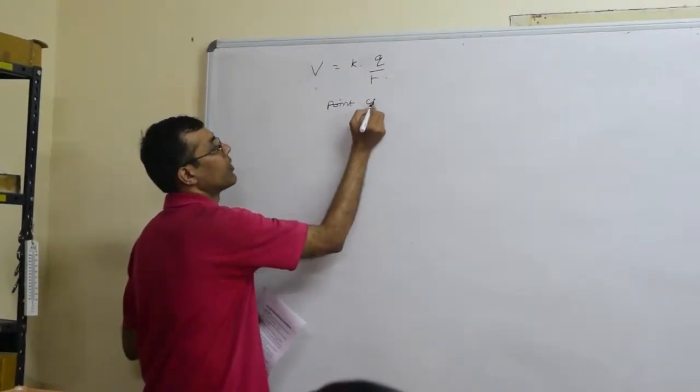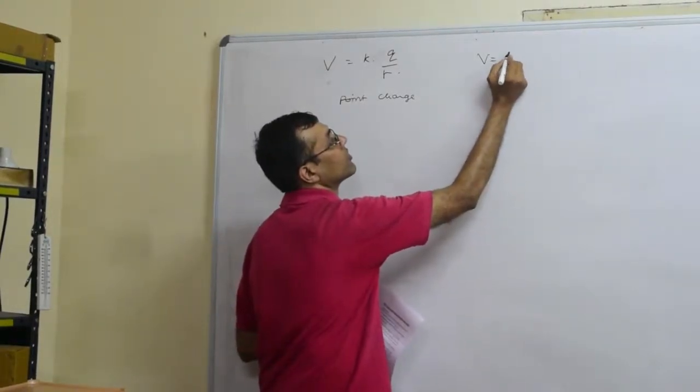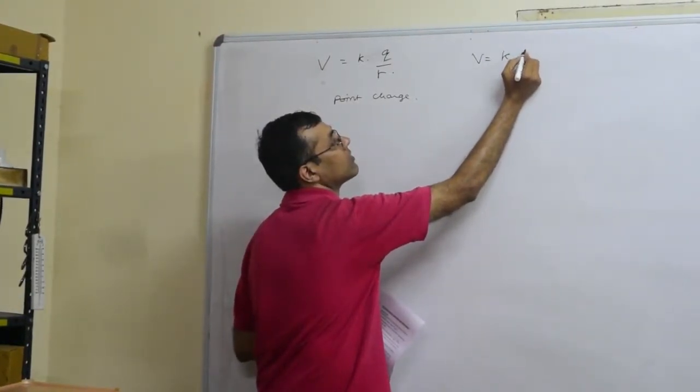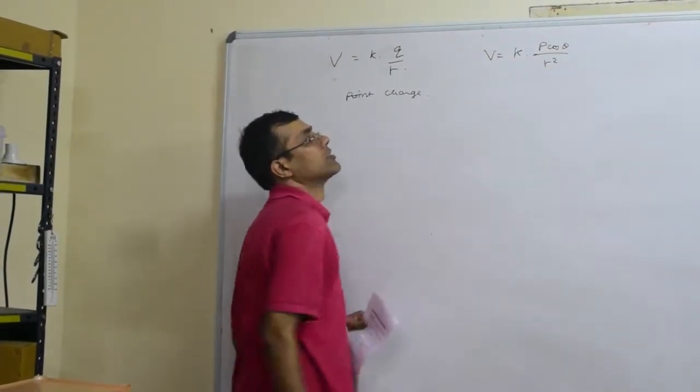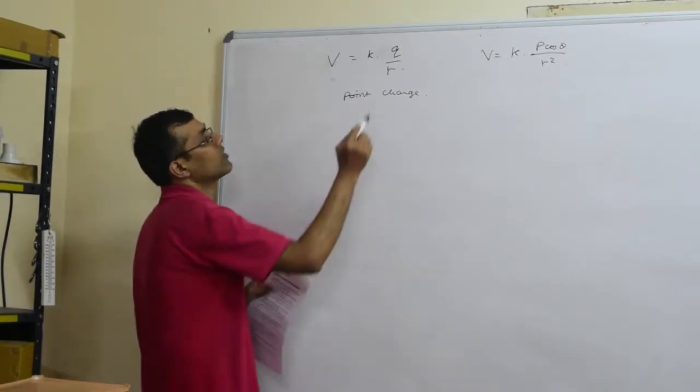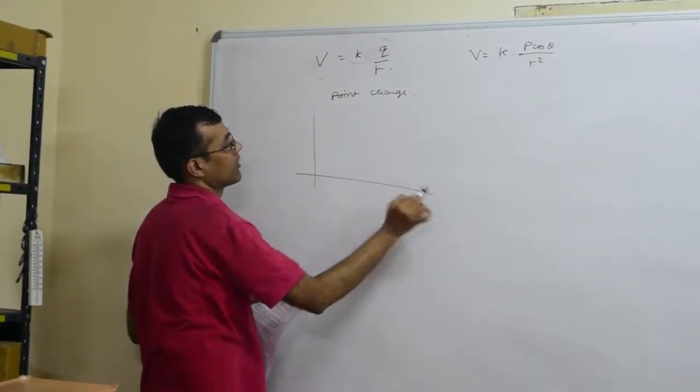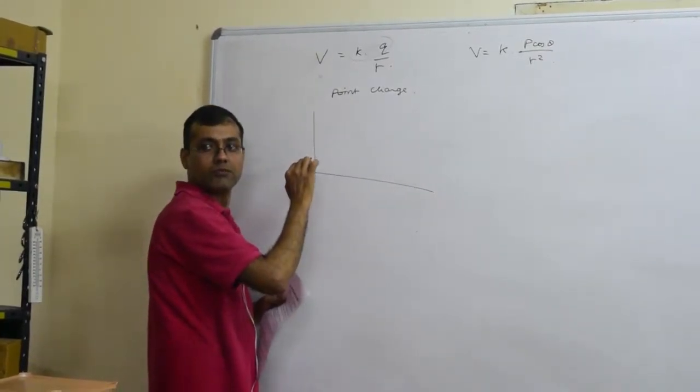So this is for point charge. For dipole, V is equal to K P cos theta by r squared, so this is constant. What can you say? V and r graph is going to look like straight line, what is...